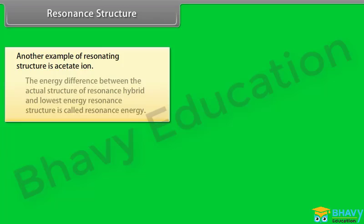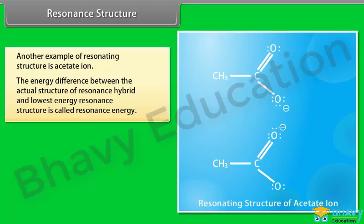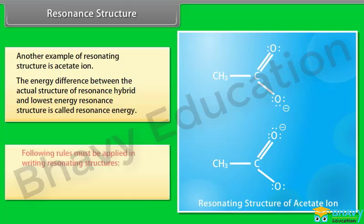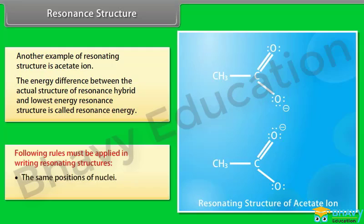The energy difference between the actual structure of the resonance hybrid and the lowest energy resonance structure is called resonance energy. The following rules must be applied when writing resonating structures: the same positions of nuclei and the same number of unpaired electrons must be maintained.